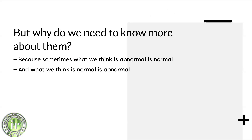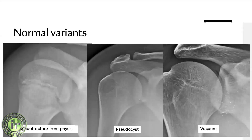Why do we need to know more about shoulder x-rays if we can already see so much on a simple single view? There are two major reasons: sometimes what we think is abnormal is actually normal, and sometimes what we think is normal is actually abnormal. Let's explore this.